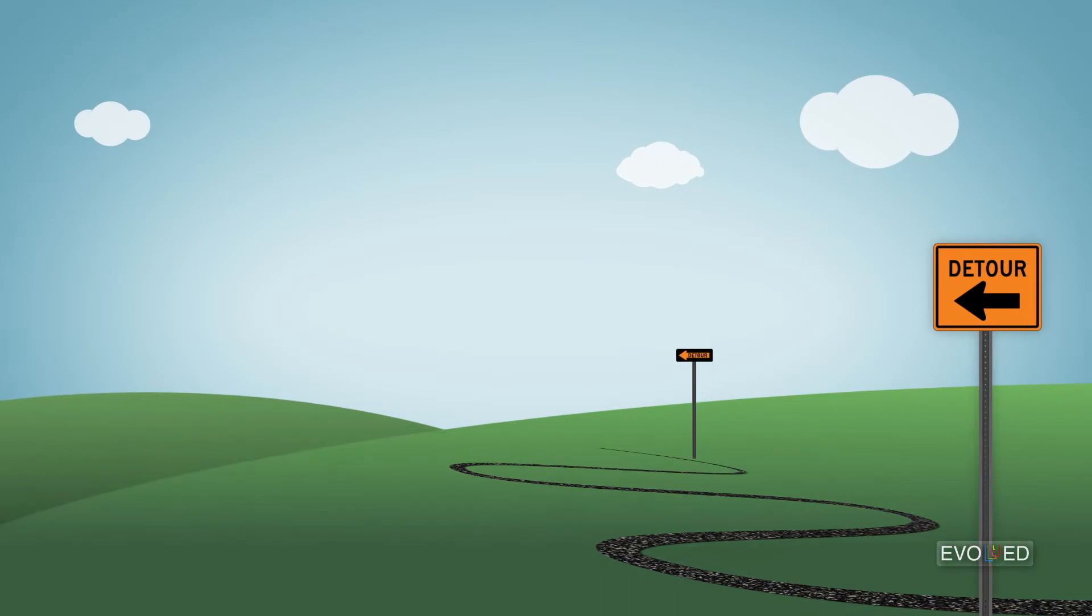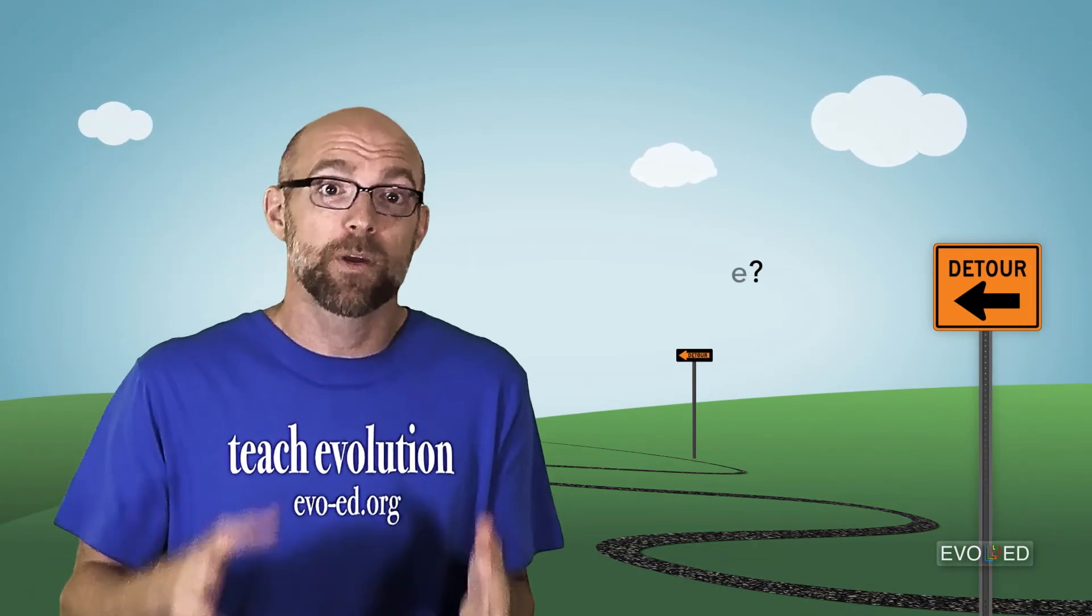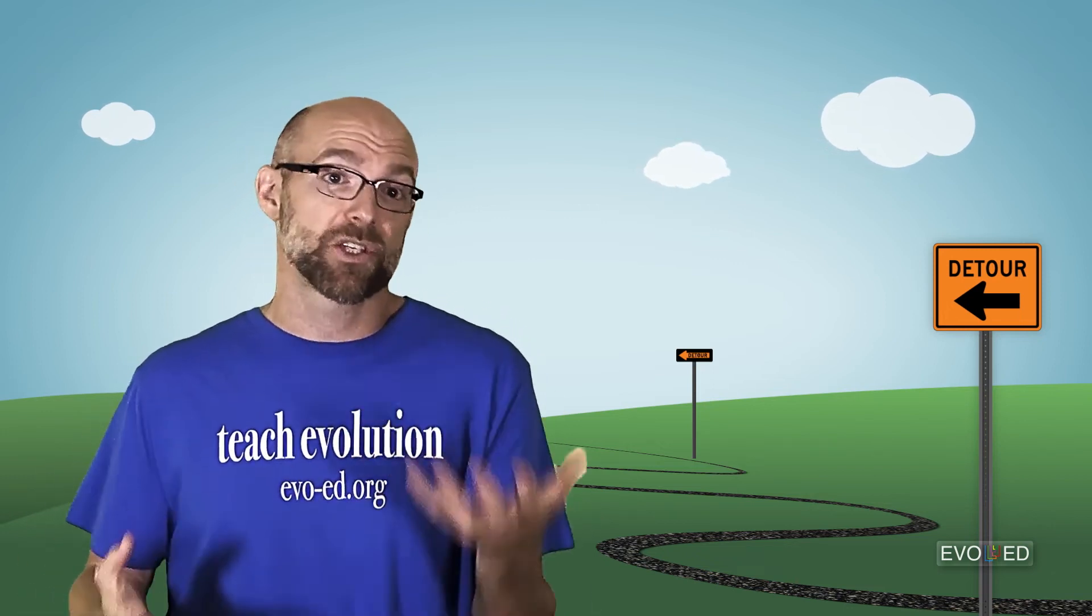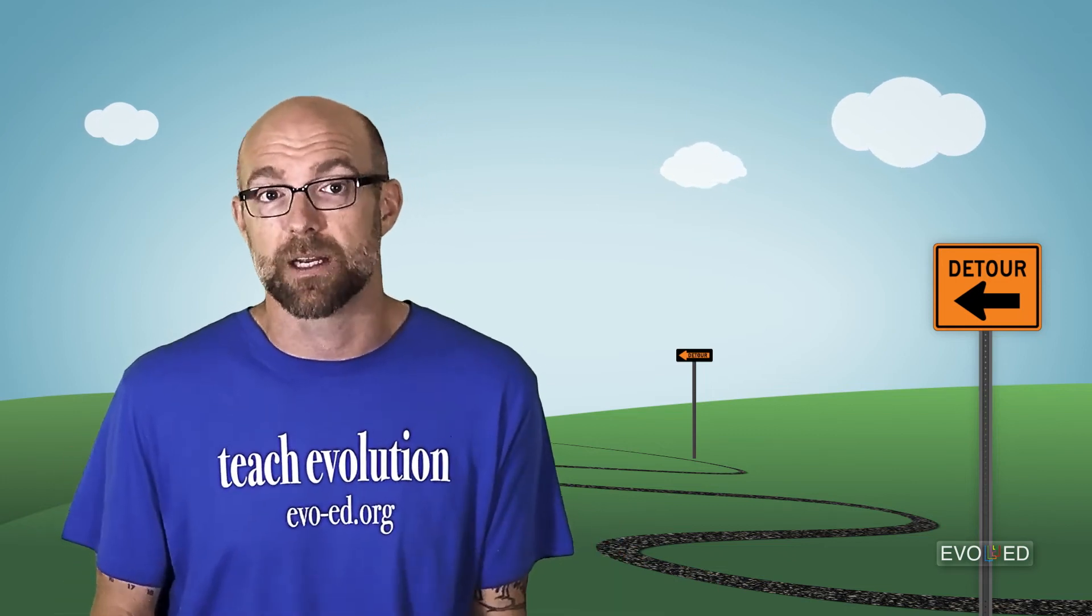Let's take a quick detour. What does it mean to switch on a gene? Well, when a gene is switched on, that simply means that the gene is being transcribed into mRNA, and then that mRNA gets translated into the associated protein.